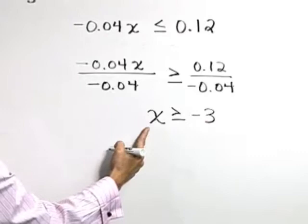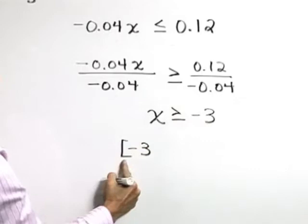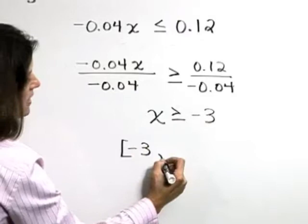Now, I want to write this inequality in interval notation. So I want to include all values that are greater than or equal to negative 3, and that's going to include the negative 3. We'll identify that with a bracket.